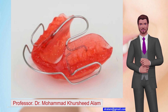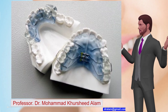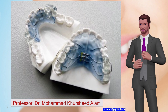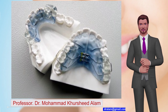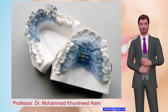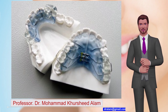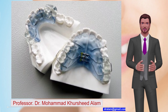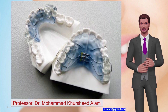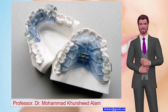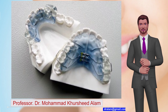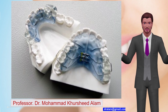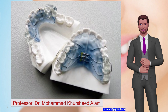Number 3: Twin Block appliance. Developed by William Clark in 1977. Passive tooth-borne appliance. Usually removable but can be fixed. Has separate upper and lower plates. Used in Class 2 Division 1 Malocclusion, Class 2 Division 2 Malocclusion, and anterior open bite.